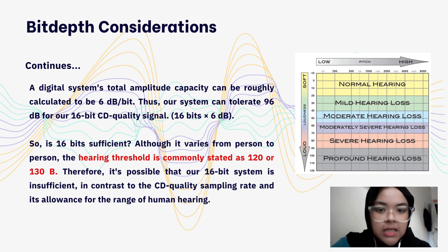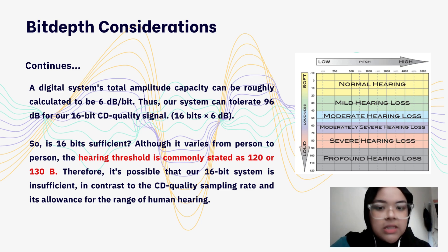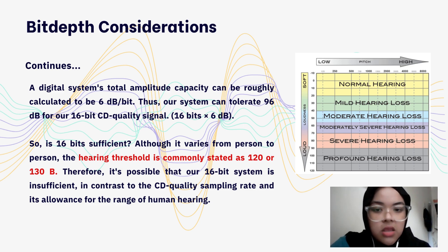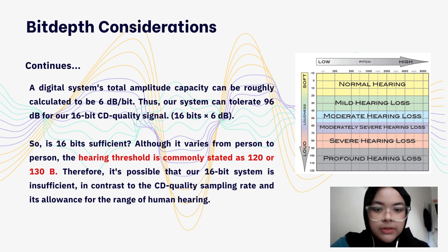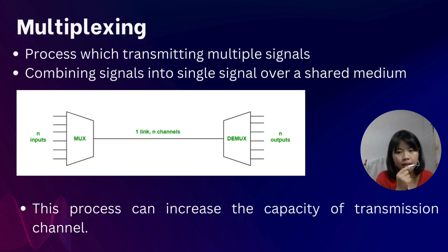Is 16 bits sufficient? Although it varies from person to person, the hearing threshold is commonly stated as 120 to 130 decibels. Therefore, it is possible that our 16-bit system is insufficient in contrast to the CD quality sampling rate and its allowance for the range of human hearing.